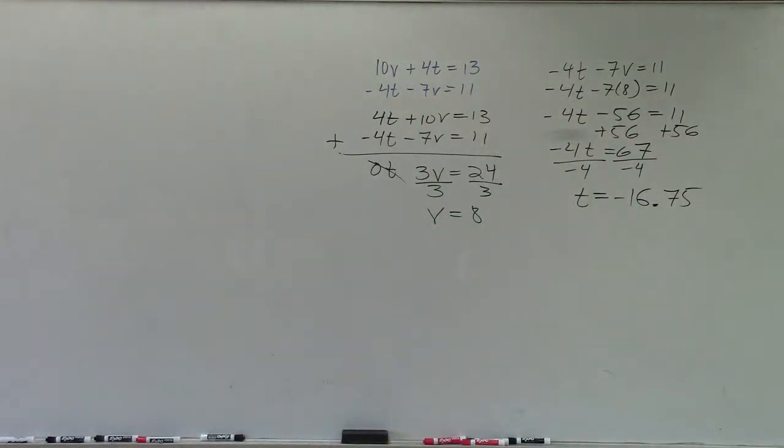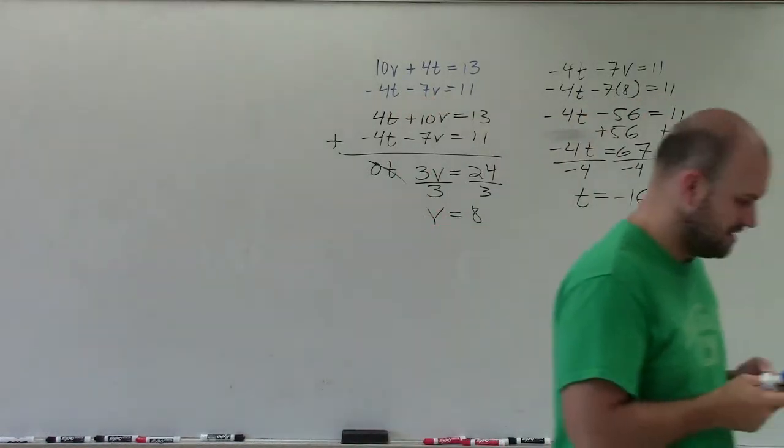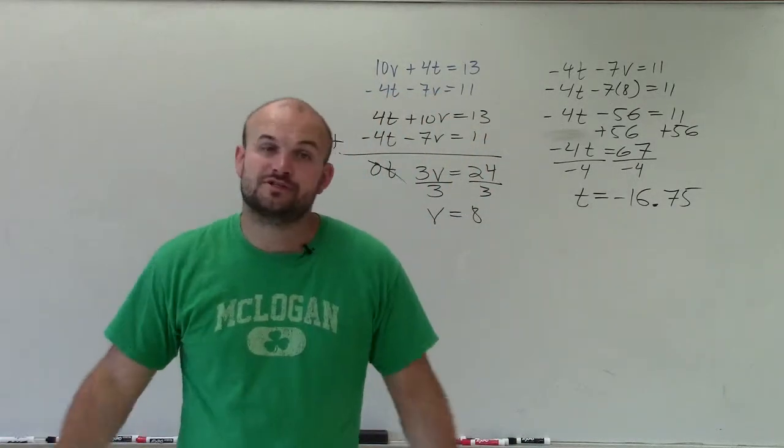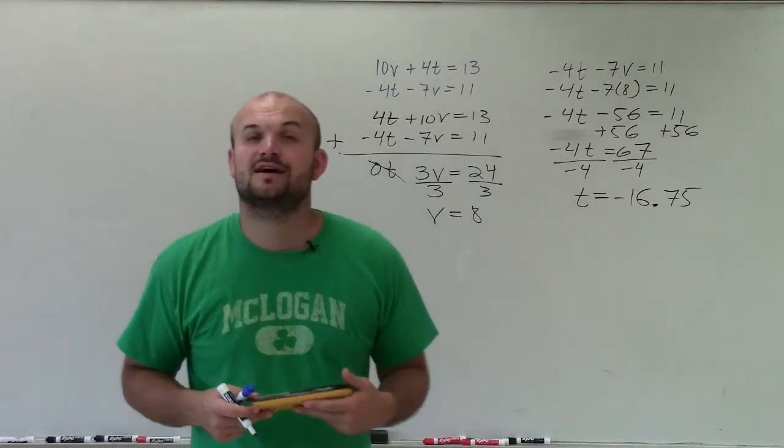Let me just go and double check that, because that would be 16 and 3 quarters. So 67 divided by, yep, very good. All right, so there you go, ladies and gentlemen. That is how you solve the system using elimination. Thanks.